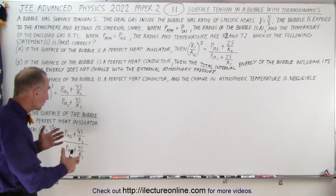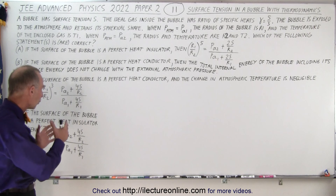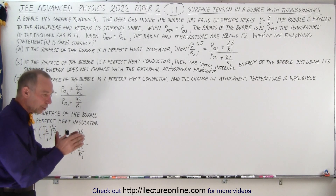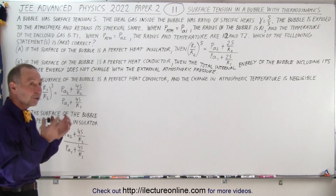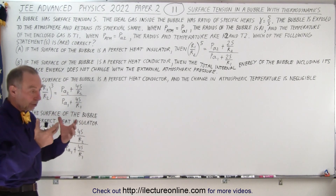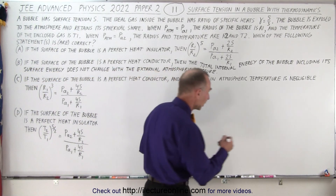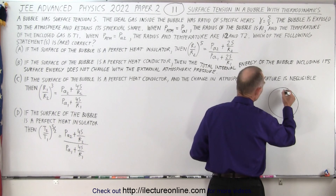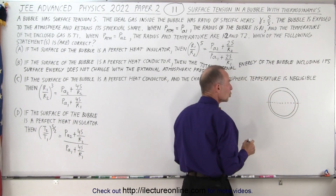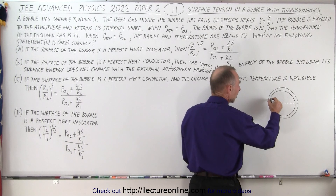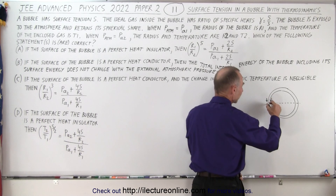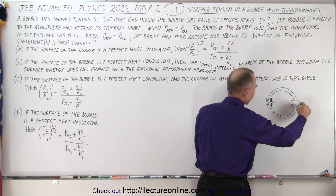First, we need to figure out how surface tension plays into the overall structure of this problem. If there's no surface tension, the pressure inside the bubble equals the pressure outside. But if there is surface tension, the pressure inside is greater than outside by the additional pressure caused by the surface tension. When we think of a bubble, we must consider both the inside and outside surfaces. If we imagine cutting the bubble in two, we see surface tension on the inside surface and on the outside surface — both must be accounted for.